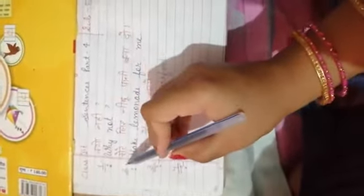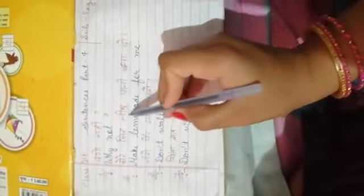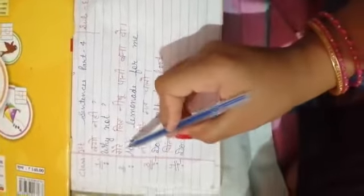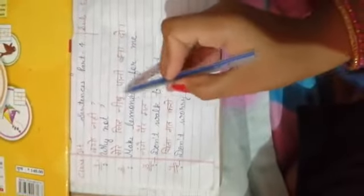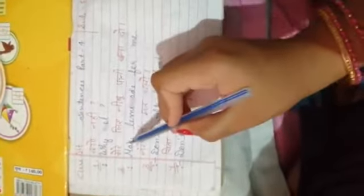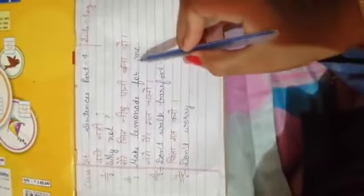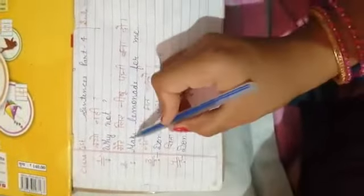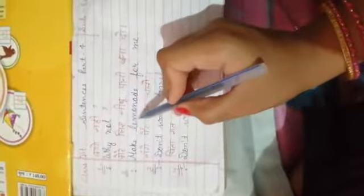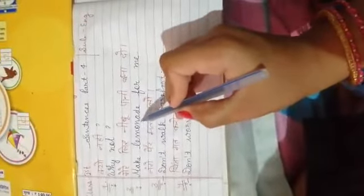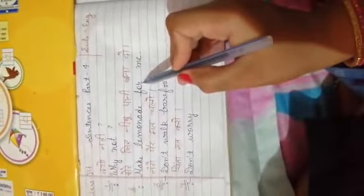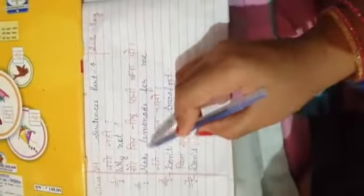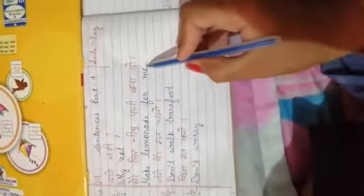Next sentence is मेरे लिए निम्बु पानी बना दो. Make lemonade for me. निम्बु पानी को lemonade बोलते हैं. M-A-K-E, make. L-E-M-O-N-A-D-E, lemonade. Make lemonade for me.